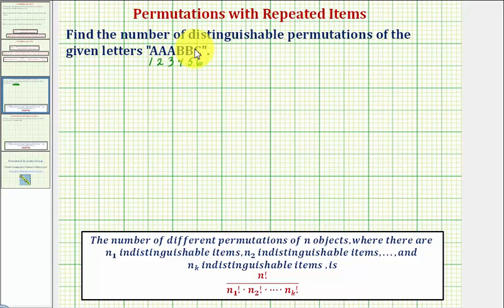So looking at our notes below, the number of different permutations of n objects, where there are n sub one, n sub two, all the way through n sub k repeated or indistinguishable items, or in this case letters, is given by n factorial divided by this product, where the product is n sub one factorial times n sub two factorial all the way through times n sub k factorial.